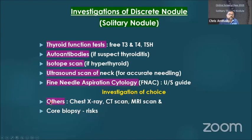Other investigations, if and when necessary, include chest X-ray, CT scan, and MRI scan. Core biopsy is done if FNAC is negative but you are highly suspicious of malignancy.